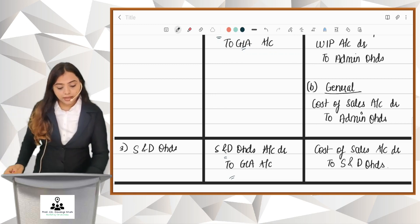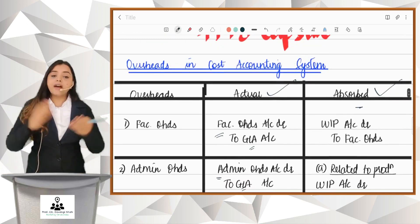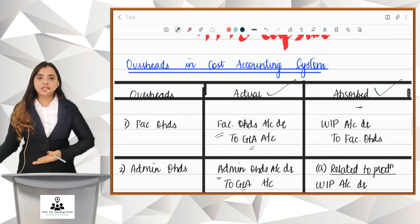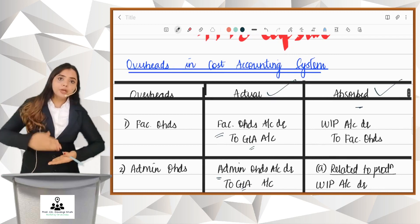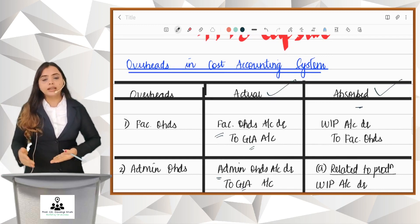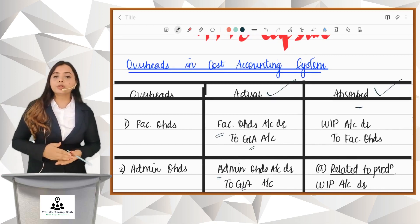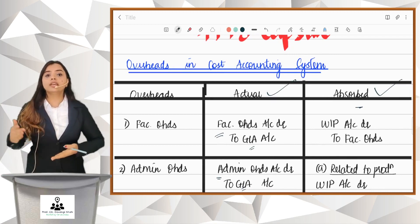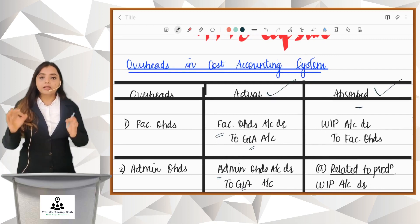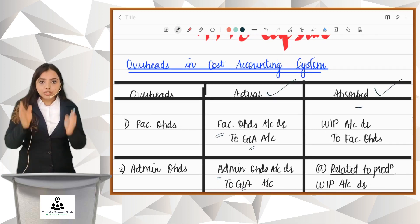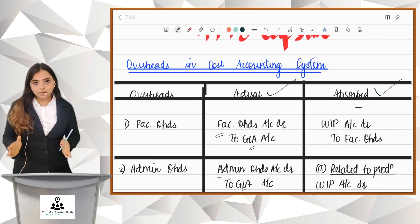So to recap: Factory Overheads to GLA, Admin Overheads to GLA, and Selling and Distribution Overheads to GLA — these entries are for the actual overheads incurred.